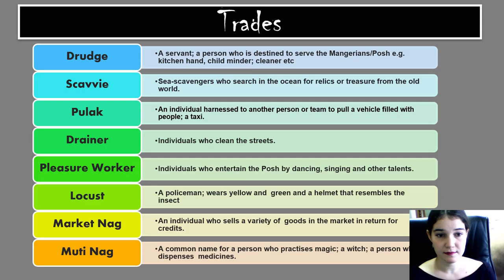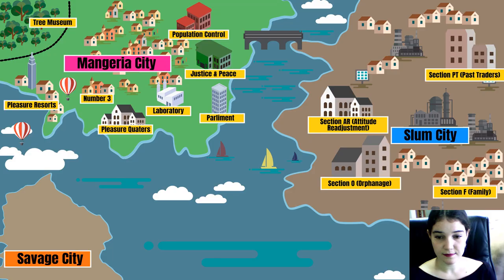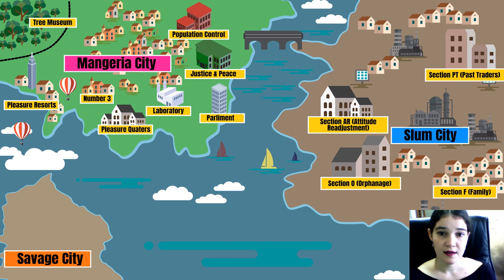Here is a summary of all the trades we find in The Mark. I designed a map to illustrate the divide between the Mangareans and the traders. As you read the novel, you will get a better idea of where each event takes place. The Mangareans enjoy their riches and pleasant neighbourhood in Mangaria City, while the traders live in horrible conditions in slum city — two extremes divided by a single river.